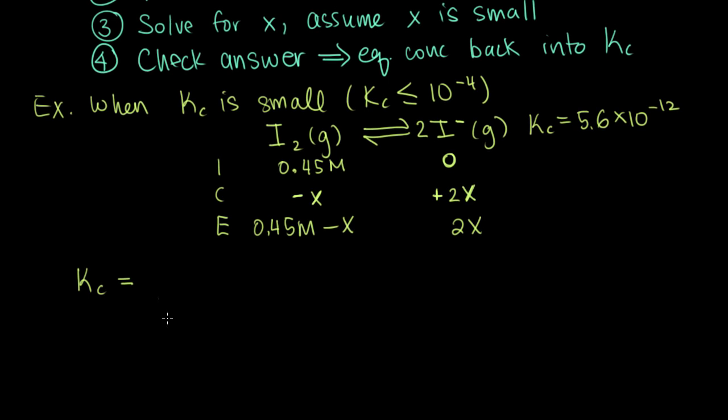Now we can use our Kc expression to solve for x when we assume x is small. Kc for this particular problem is the concentration of our product I minus squared, since we have a stoichiometric coefficient of 2 there, divided by the concentration of I2. If we plug in our equilibrium concentrations from our ice table, we get that this is 2x squared divided by 0.45 molar minus x. So far we haven't made any approximations.